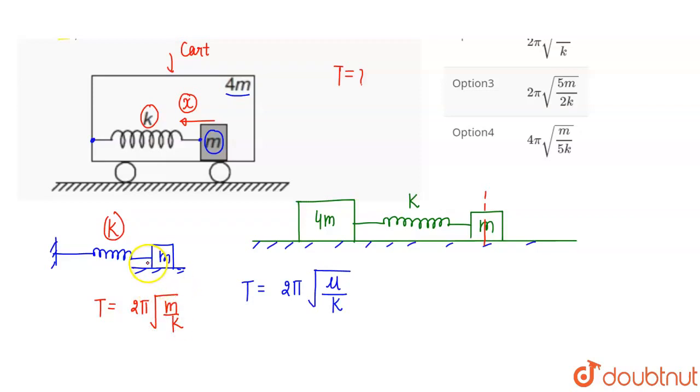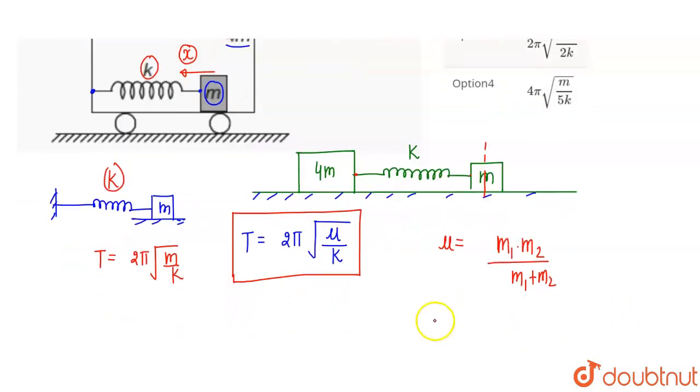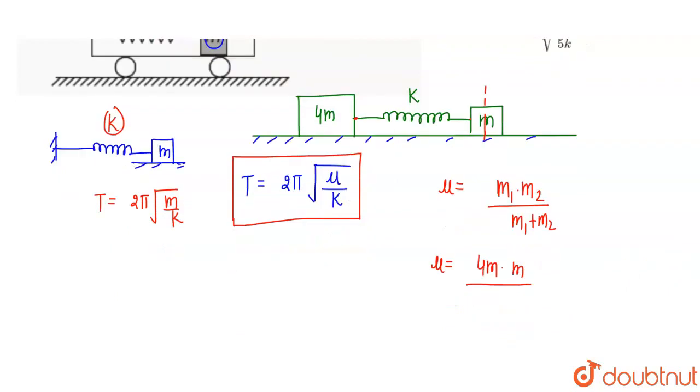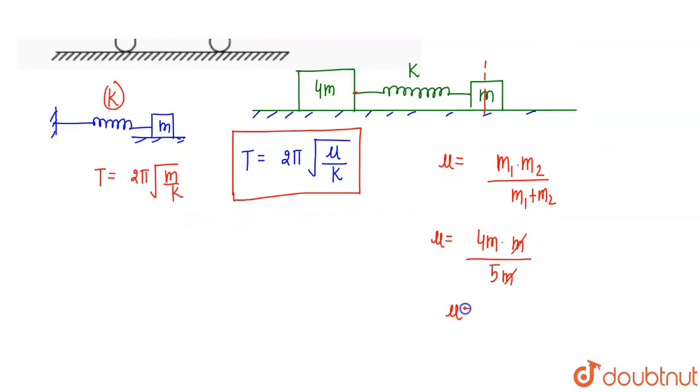One mass is 4M, one mass is M. Then μ, what is effective mass μ? It's the reduced mass and its value is m1 into m2 divided by m1 plus m2. If we put the values, μ equals 4M times M divided by 4M plus M, which equals 4M² divided by 5M. After canceling M, the effective mass will be 4M by 5.